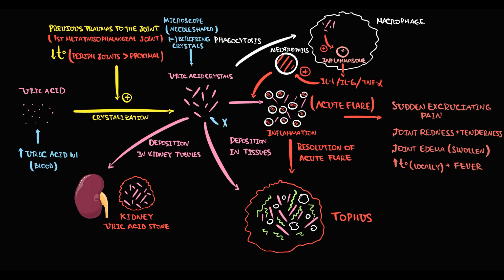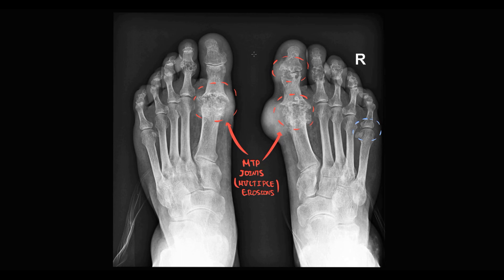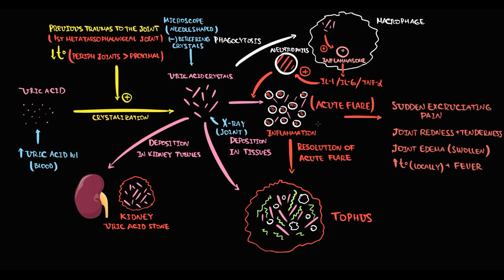A major diagnostic method is X-ray of the joint. On this X-ray we see multiple erosions at the metatarsophalangeal joints on both feet. Comparing a healthy joint to the affected joint, the difference is huge. We also see the affected first distal interphalangeal joint, and other distal interphalangeal joints from both sides are also affected. Severe inflammation inside the first metatarsophalangeal joint causes massive soft tissue swelling. On complete blood count we can determine inflammation by elevated white blood cells, ESR, and C-reactive protein. To diagnose gout we use the gout criteria.